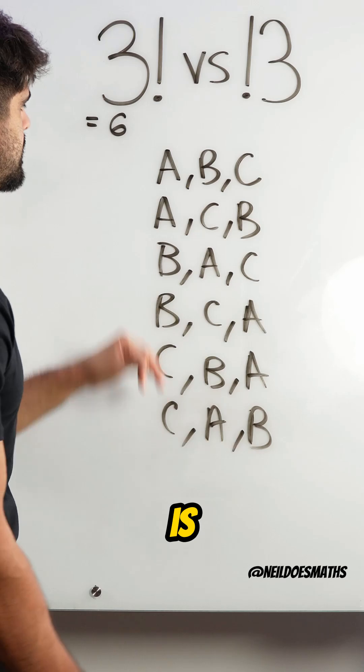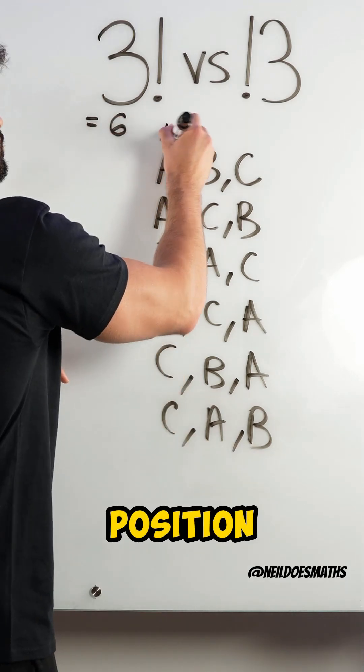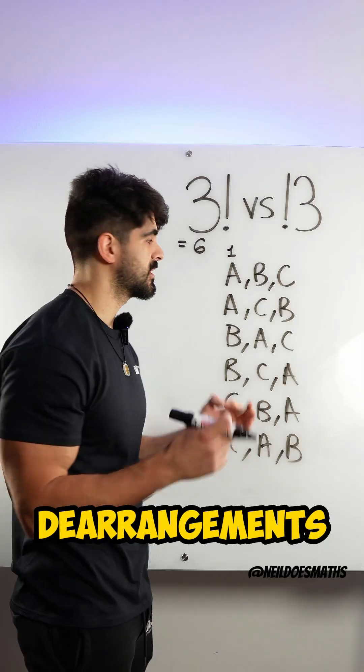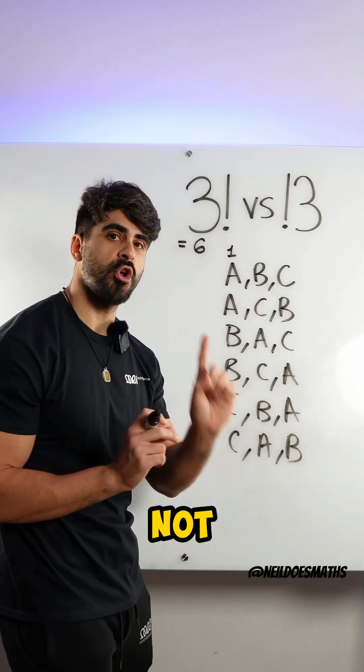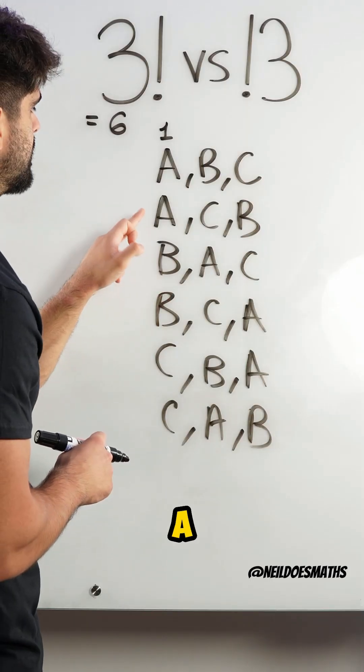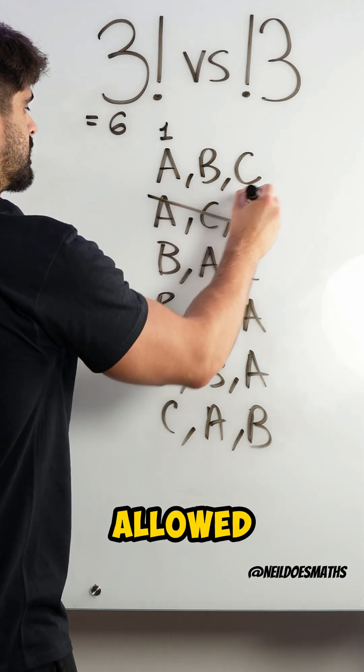Now, what I mean by that is can you see that A is in the first position? The number of derangements observes the combinations where A is not in the first position. So, can you see this has A in the first position? We're not allowed this.